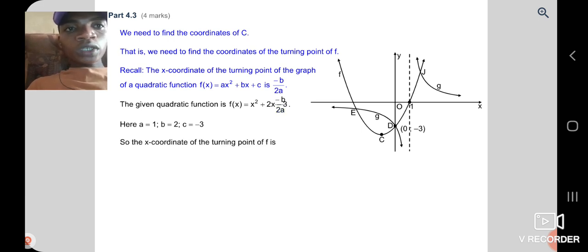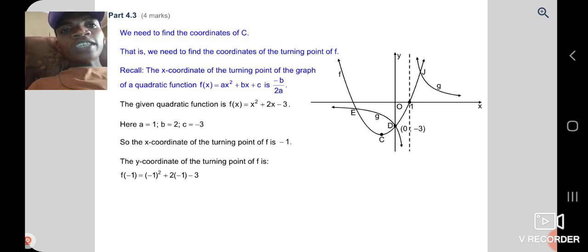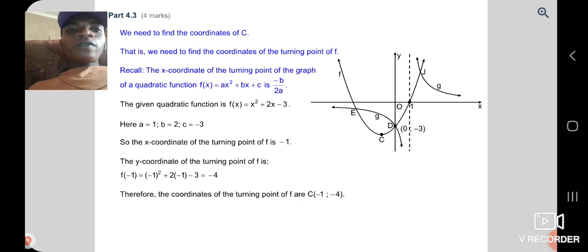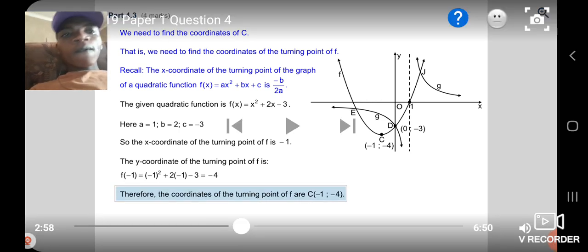Show the turning point. x = -2/(2×1) = -1. So we take that -1 into the original equation when we want to find our y. Our y = -4. So the coordinate of C = (-1, -4). Let's continue.